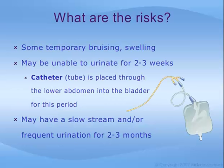After surgery, some patients may experience temporary bruising and swelling. It is common to have difficulty urinating for two to three weeks after the procedure. Therefore, a suprapubic catheter is placed into the bladder through the lower abdomen to drain the bladder if necessary. Your doctor will instruct you on how to use this catheter. After a period of time, you will begin to clamp this tube off and urinate on your own, then unclamp the tube to drain the remainder and check to see how well you emptied on your own.